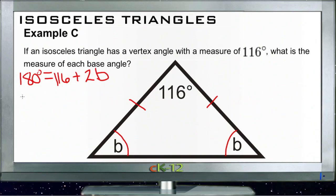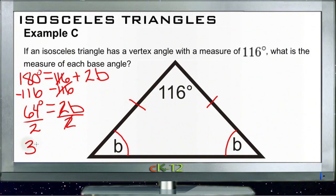So if we subtract 116 from both sides, then the 116 falls away and we get 64 degrees is equal to two B angles. So then we need to divide both sides by two. The two falls away and we get 32 degrees is equal to B.